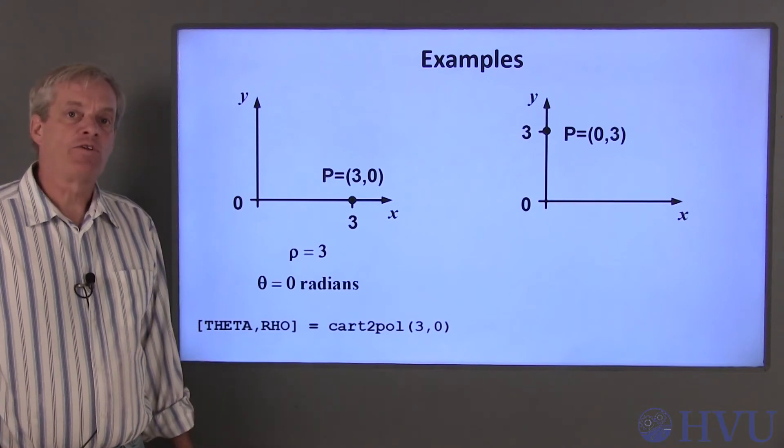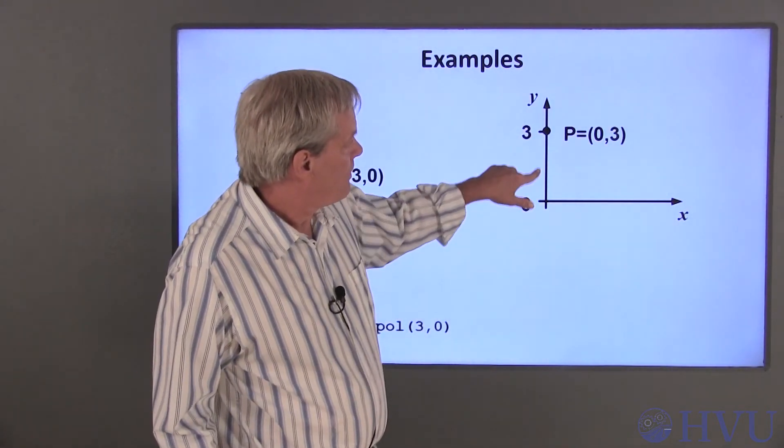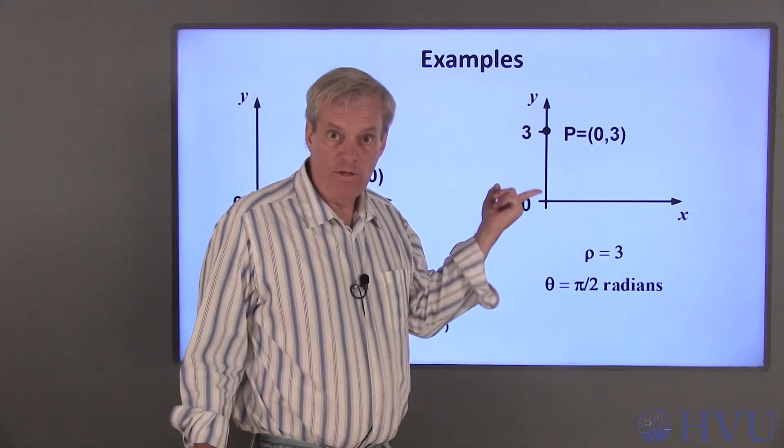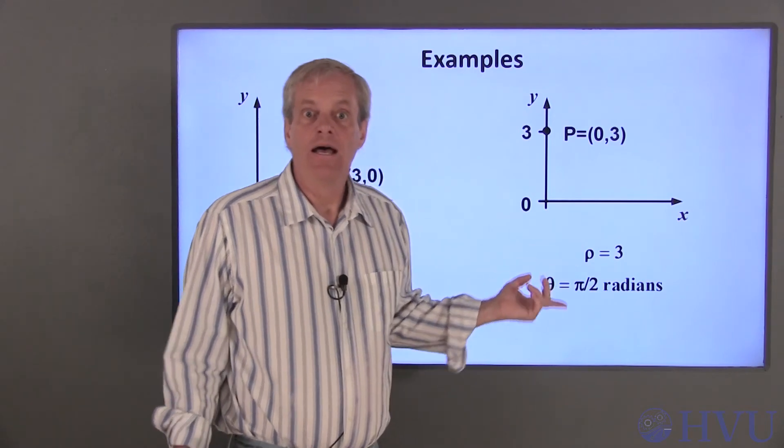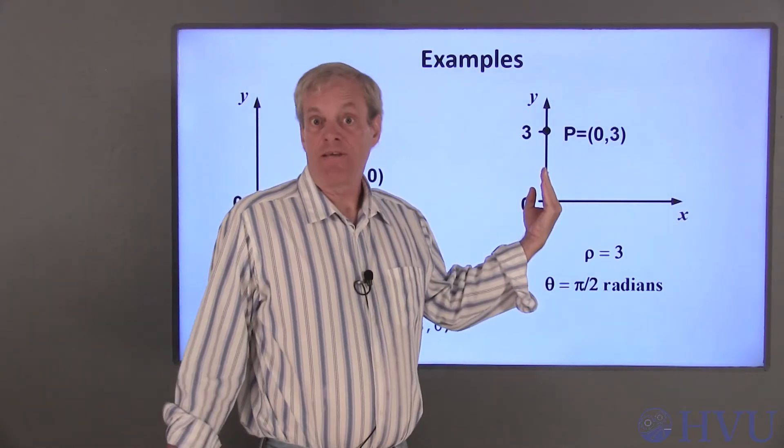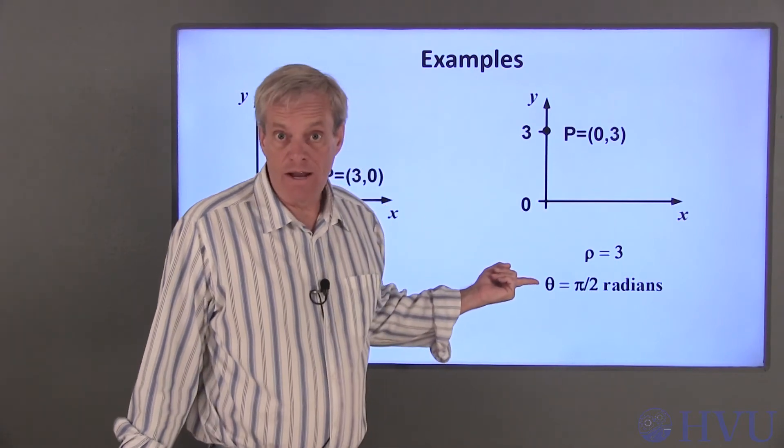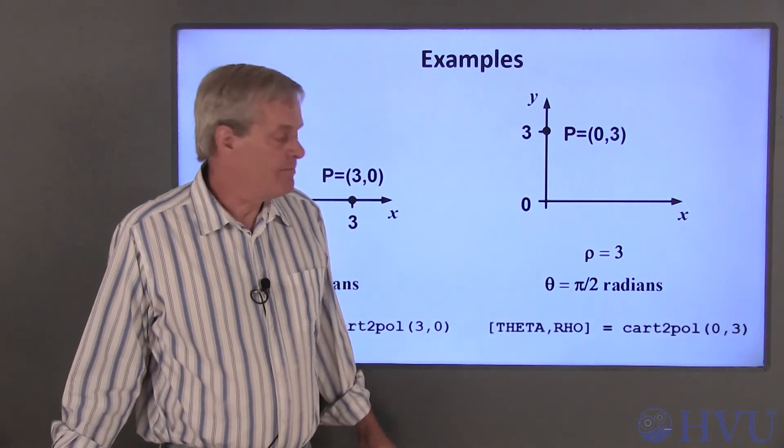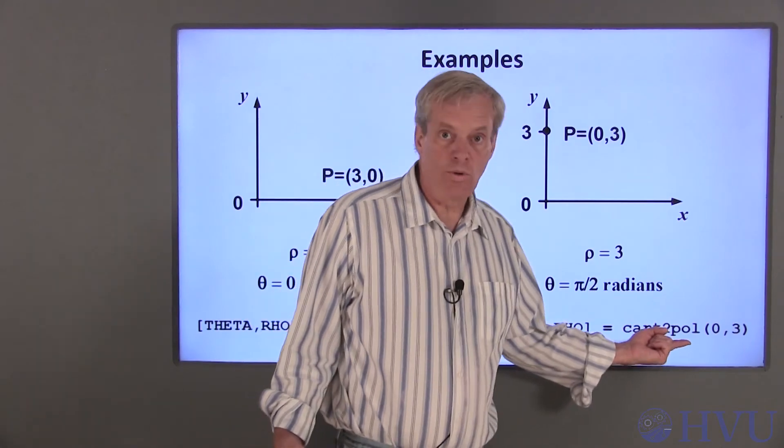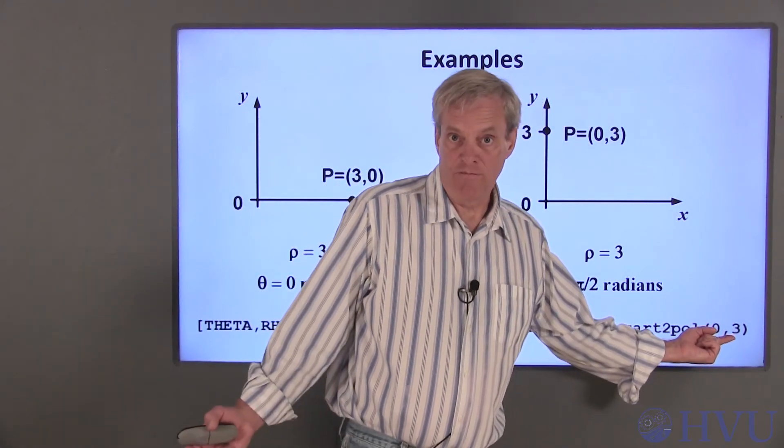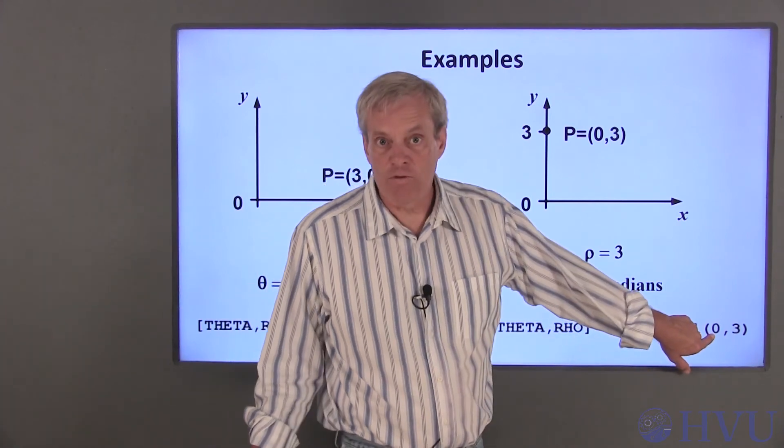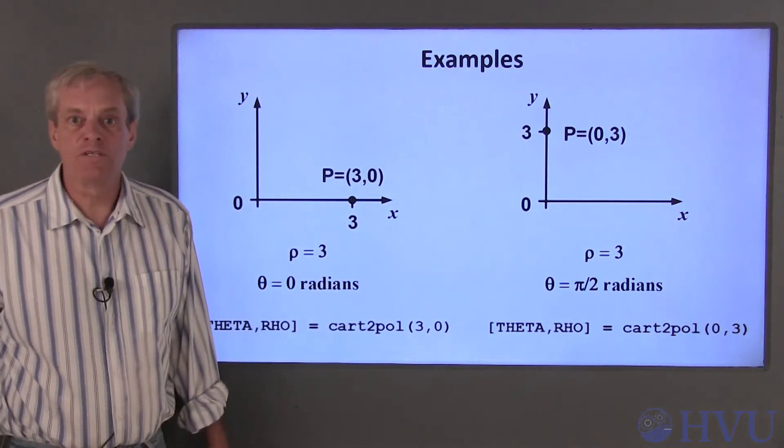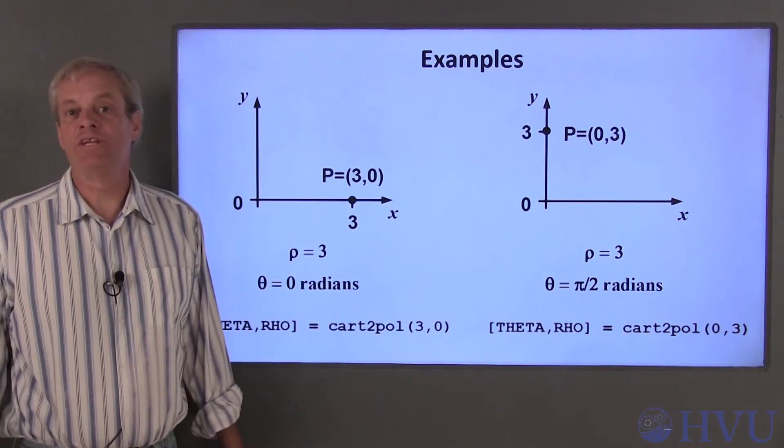For our second example, let's convert the cartesian coordinates (0,3) to polar coordinates. The point is again three units from the origin, so we'd expect ρ to be three. Since the point is on the y-axis, we'd expect θ to be 90 degrees or π/2 radians. The cart2pol command returns angles in radians. We can use the Octave command [θ, ρ] = cart2pol(0, 3) to perform this conversion. Notice that the x-coordinate is first in the input list and the y-coordinate is still second. Now let's take a look at how Octave performs these functions and what the effect of changing the variable names is.